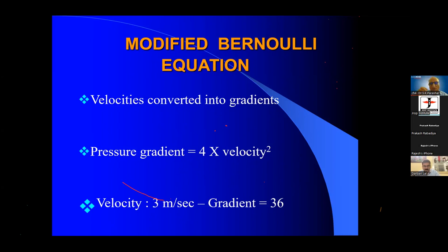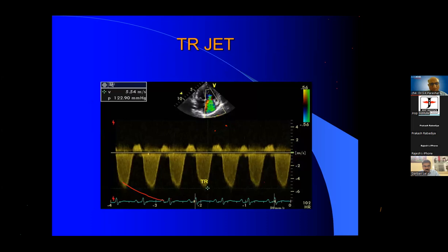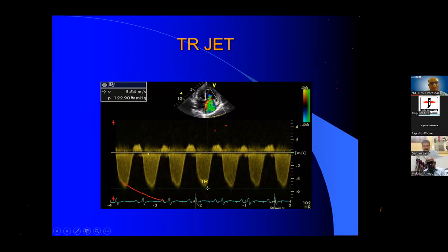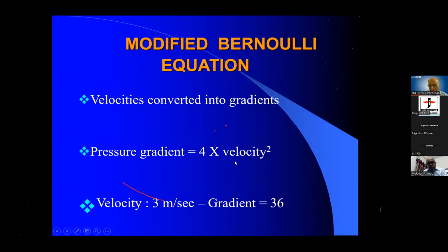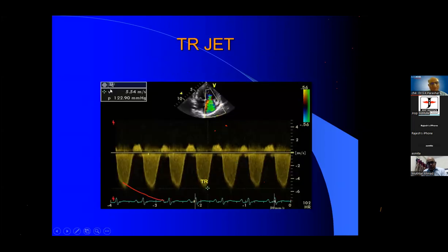Your role is to get a good velocity. For example, the TRJ velocity is 5.54 m/s — automatically by the modified equation it becomes 122 mmHg. So 4 × velocity² = 122. You record a good velocity, measure it, and the machine automatically gives you the gradient. You have recorded a velocity, and 4 × velocity² gives you the gradient or pressure. Remember this thing.